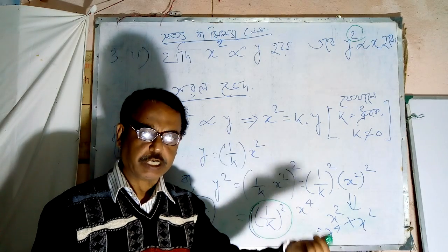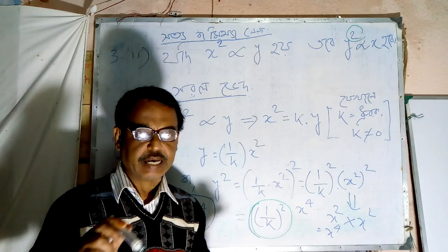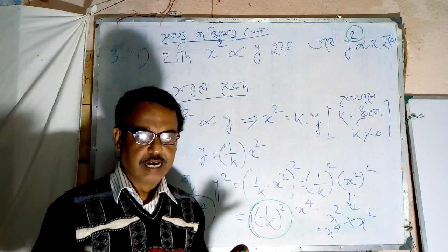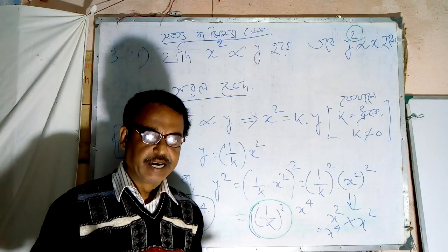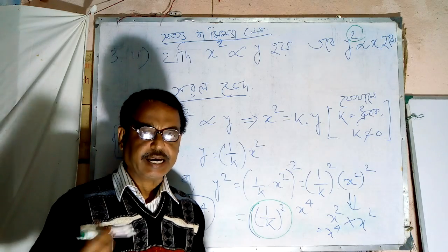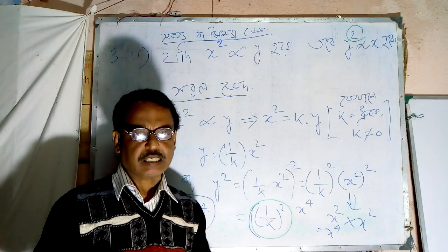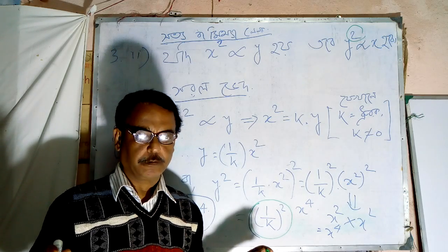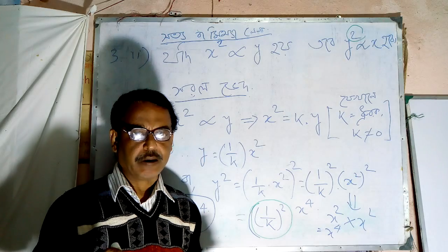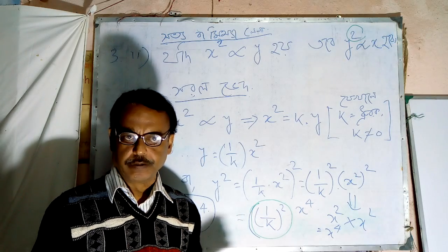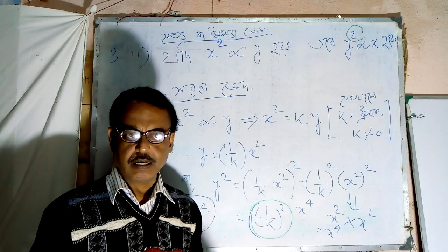y squared is equal to 1 by k squared into x4. We have 1, 3, x, x, x. k, 3k, k square, k cube, k plus 5, k minus 9, these are all constants. This is the answer: k plus x, k minus y. This is the answer.